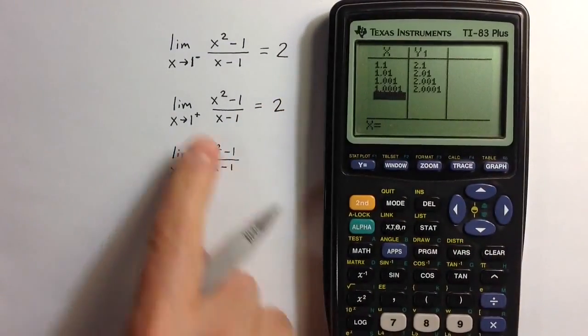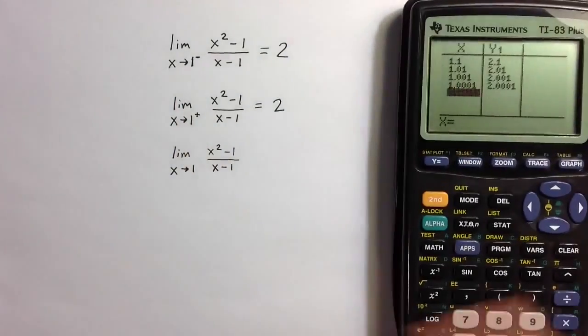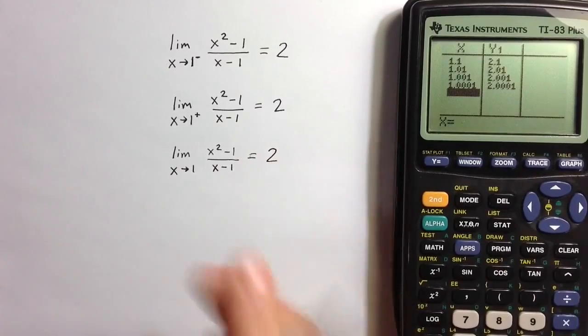And because the left-hand limit and the right-hand limit approach the same value, the two-sided limit also exists and equals 2.